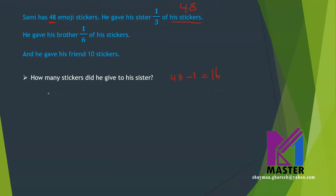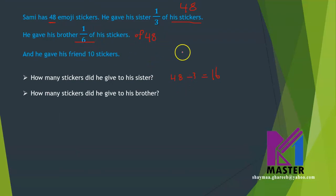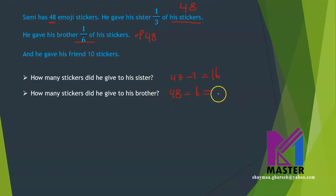Now let's see the next question: how many stickers did he give to his brother? He gave his brother one sixth of his stickers, which means one sixth of 48. So 48 divided by 6 equals 8. He gave his brother 8 stickers.